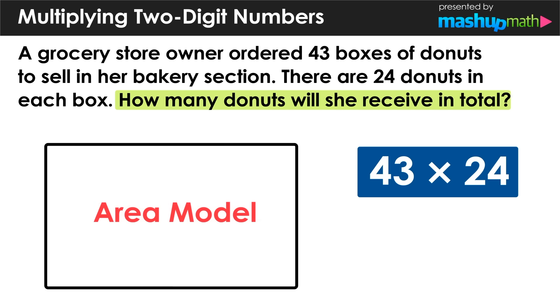We are going to construct a rectangular area model to represent the multiplication. On the top row of the model we're going to put 43, and on the left column, 24.